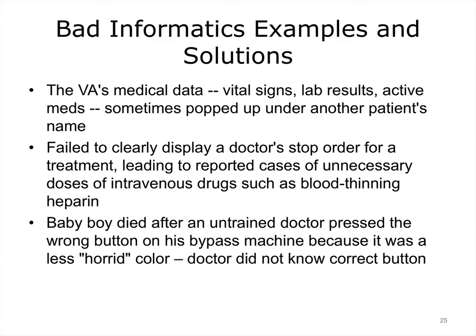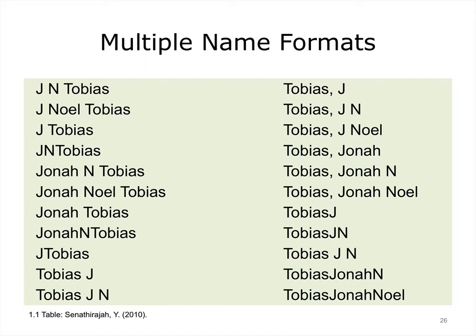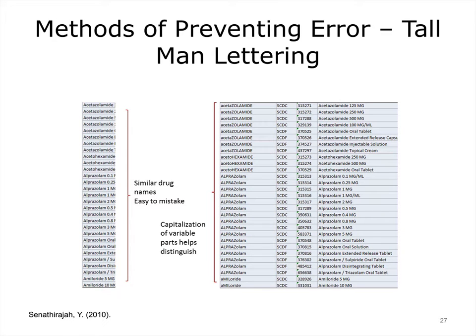There are many examples of bad design. One describes a problem with VA medical data in which data sometimes popped up under another patient's name. Other examples include failure to clearly display stop orders leading to unnecessary drug doses, and a fatality after an untrained doctor pushed the wrong button. Multiple name formats are just one of the design issues that must be addressed carefully. Drug names with their common stems and varying suffixes are another, because of the similarity in names and the fact that in alphabetized pick lists they will appear together, increasing the risk of the wrong drug being selected.